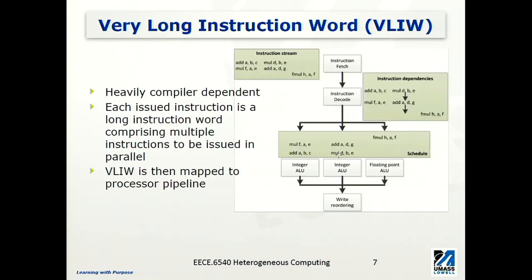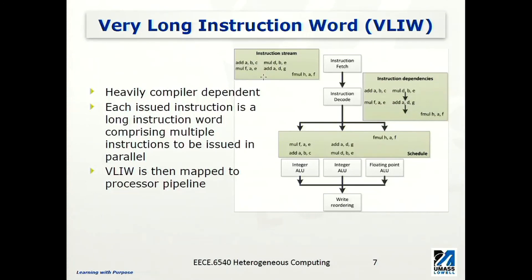Comparing with the previous example, this Very Long Instruction Word approach shifts the responsibility to compilers. Before the program runs, the compiler discovers opportunities to execute instructions simultaneously and packs them into long instruction words. Of course, if a long instruction word has three possible instruction slots, there may be empty spots — it's not guaranteed that every slot will be filled in every long instruction word. In that case, there is some waste in terms of execution units.